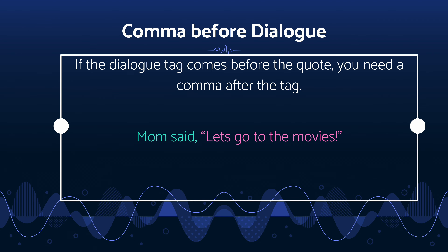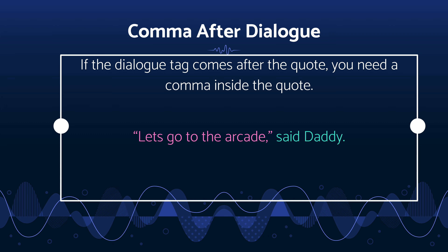There are sentences where the dialogue tag is before the dialogue or quote. In this case, we must put a comma after the last word before the quotation marks. This signifies that there will be dialogue or that something is being said. Now, if the dialogue tag is placed after the quote, like in most cases, then the comma would be placed inside the quotation marks and after the sentence. This varies, however, because if there are multiple sentences, we wouldn't use a comma. But as shown in this example — 'let's go to the arcade, said Daddy' — since there's only one sentence, we can use a comma to indicate the end of the quotation.